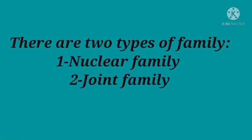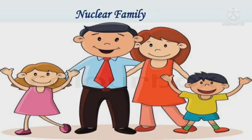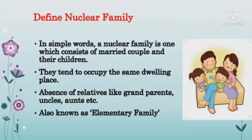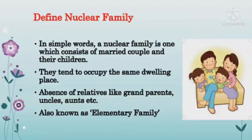There are two types of family. One is a nuclear family. Nuclear family depicts mother, father, daughter and son. In simple words, a nuclear family is one which consists of a married couple and their children — our parents, younger brother, younger sister, or elder brother or elder sister — who tend to occupy the same dwelling place. In a nuclear family, there is an absence of relatives like grandparents, uncles and aunts. A nuclear family is also known as an elementary family.